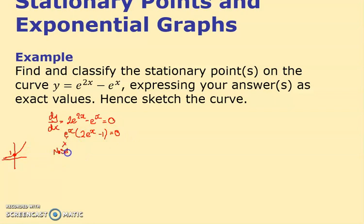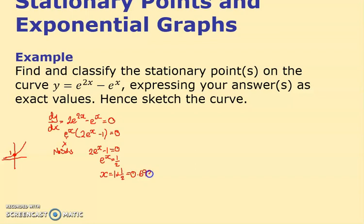So the only solution comes from 2e^x - 1 = 0, giving e^x = 1/2, and therefore x = ln(1/2). I checked on a calculator and it's approximately -0.693.